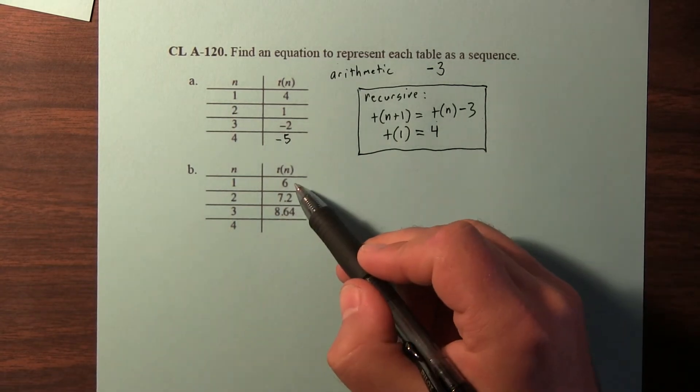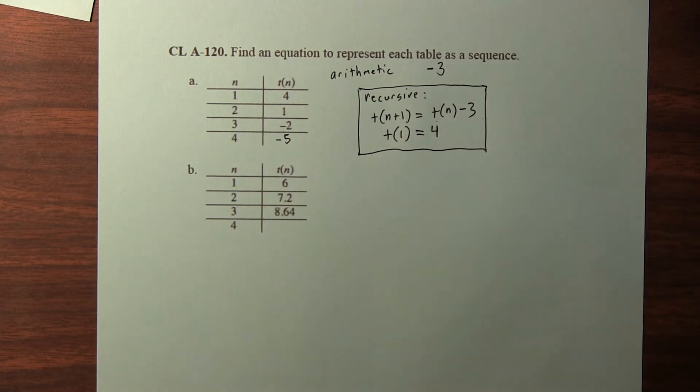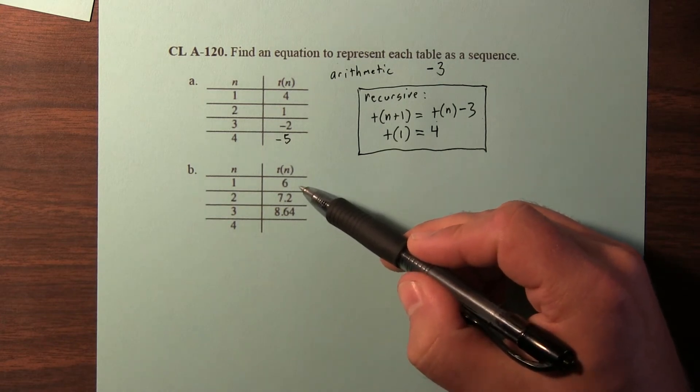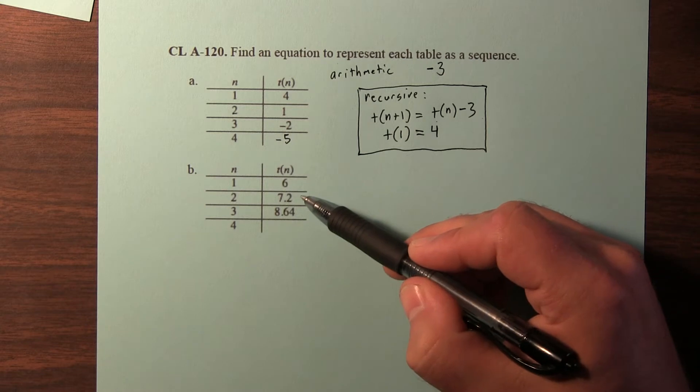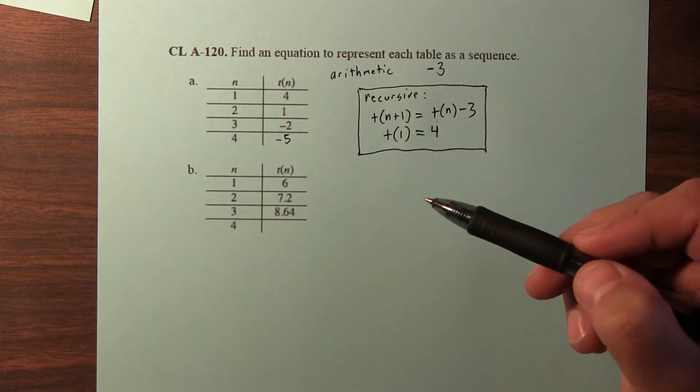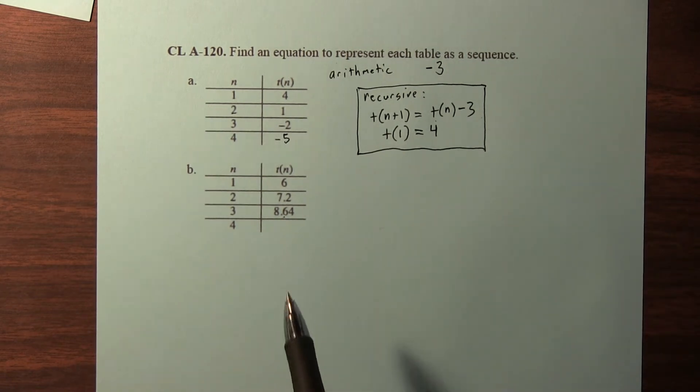On this next one, our first term is 6, then 7.2, then 8.64. Now I don't think this is arithmetic, because from 6 to 7.2 is an additional 1.2, but from 7.2 to 8.64 is not an additional 1.2. If it was, this term would be 8.4. So I suspect this is probably geometric.